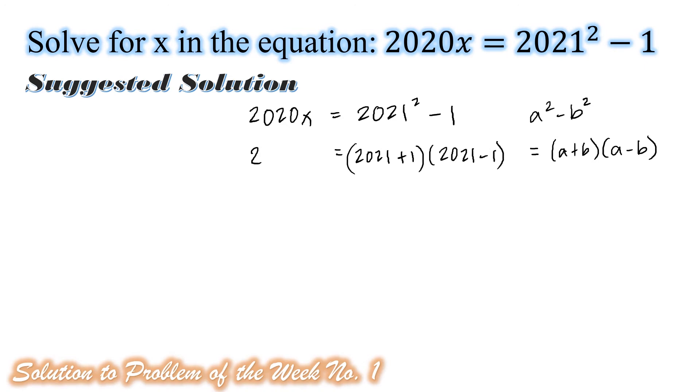Let us copy the left-hand side. That is 2020x. Then we have 2020x. In the right-hand side, 2021 plus 1 is 2022. Also, 2021 minus 1 is 2020.